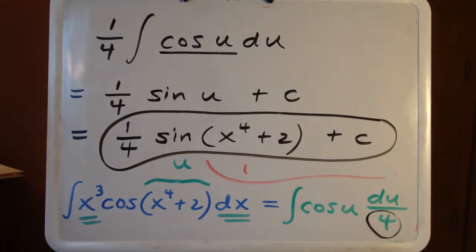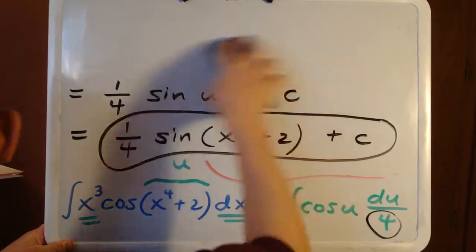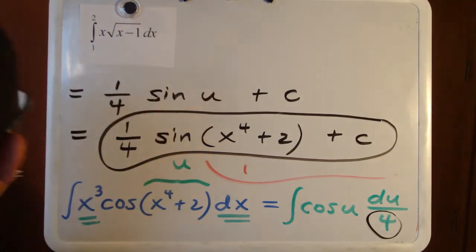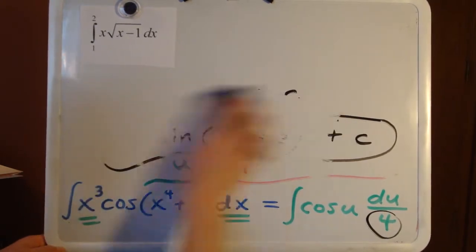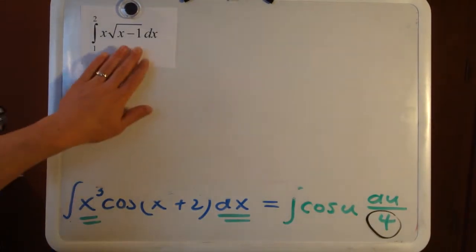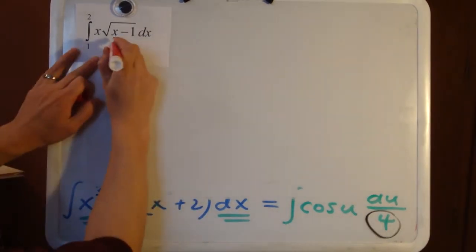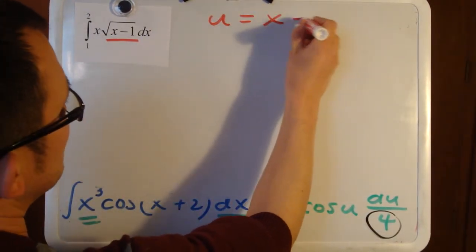One more example I'd like to do is a definite integral, because these can get a little complex. The process will look pretty similar. We'll integrate from 1 to 2 of x times the square root of x minus 1 dx. For this problem I would start in a very similar way — look for the inner part of a composite function, as that's often successful.